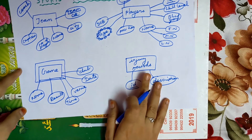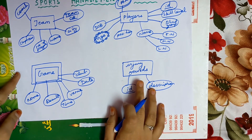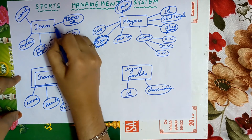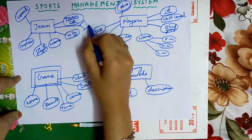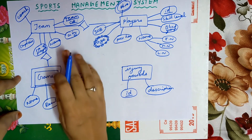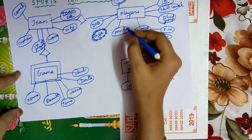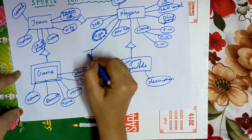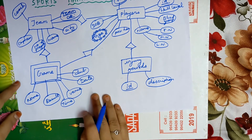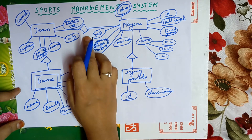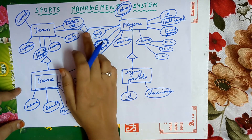The next step is to connect the entities by drawing lines with a diamond box in between, which represents a relationship. We need to write something inside each diamond box that describes how two entities are connected. For example, team and players are connected — inside the diamond box we write 'has', meaning team has players.